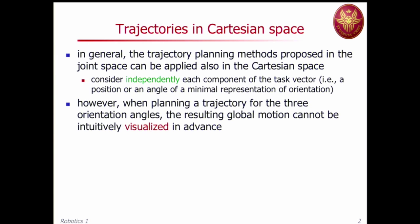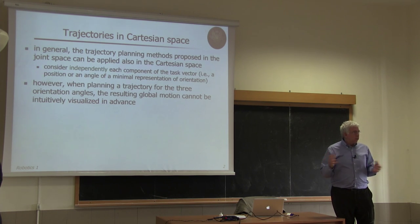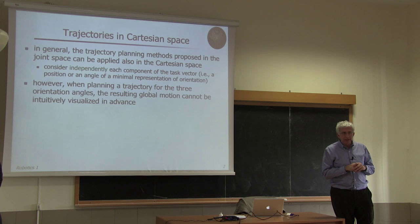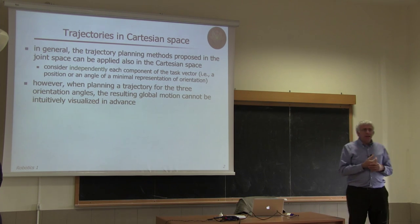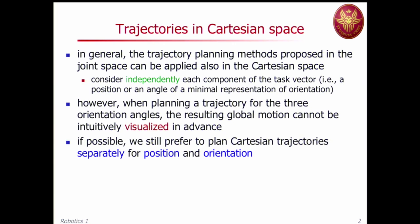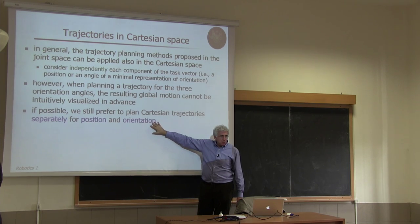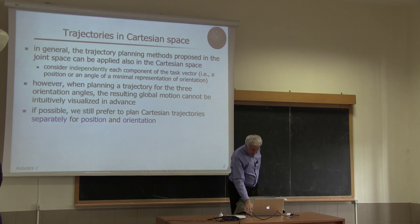One aspect is that on the orientation part, if you plan an orientation trajectory using minimal angles, you won't really understand in advance what's happening—you'll have overshooting of what kind of orientation the end effector will take between the specified knots. So it's not easy to understand the trajectory in that case. We will see that something special can be done for treating orientation. In general, we prefer to treat position and orientation separately, having one method for planning position and another for orientation.